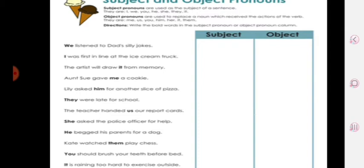Lily asked him for another slice of pizza. Here also 'asked him'—after the verb—so 'him' is an object pronoun.